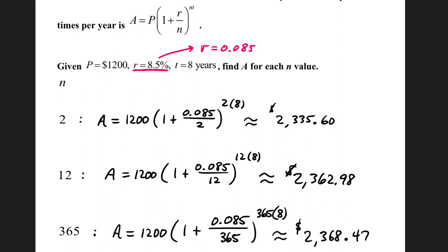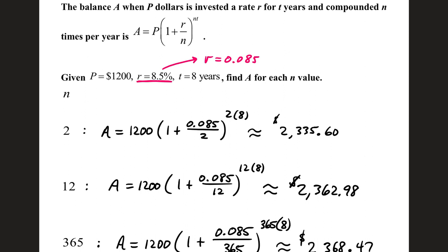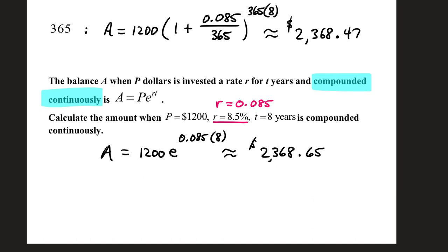There is no magic number for the most times an account can be compounded, or interest can be compounded. So we can go as far as saying compounded continuously. Now, if your description says that your money is compounded continuously, then we get away from this formula at the top.